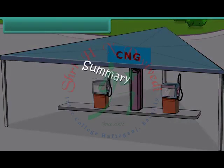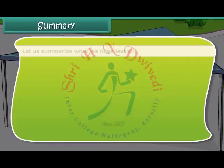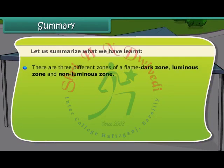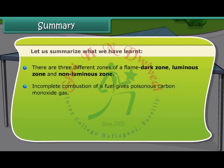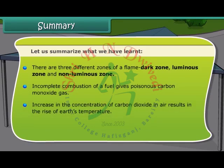Let us summarize what we have learned. There are three different zones of a flame: dark zone, luminous zone, and non-luminous zone. Incomplete combustion of a fuel gives poisonous carbon monoxide gas. Increase in the concentration of carbon dioxide in air results in the rise of Earth's temperature. Acid rain contains oxides of sulfur and nitrogen in dissolved state.